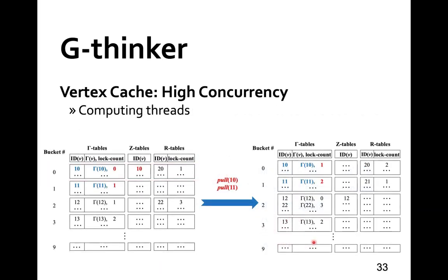If tasks request remote vertices already in the gamma table, we simply increment their counters to indicate one more task is holding them. Vertex 10 is also removed from Z table as its counter is no longer zero and it cannot be evicted. When a task finishes a round of the compute function and releases its hold on vertices such as 12 and 13, we decrement their counters in the gamma table, and since vertex 12's counter becomes zero, it is added to Z table to allow eviction.